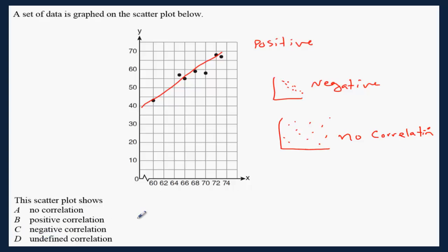And undefined correlation looks like this. You have the dots going this way, like a vertical line. This one is undefined because the slope of this line is undefined correlation.